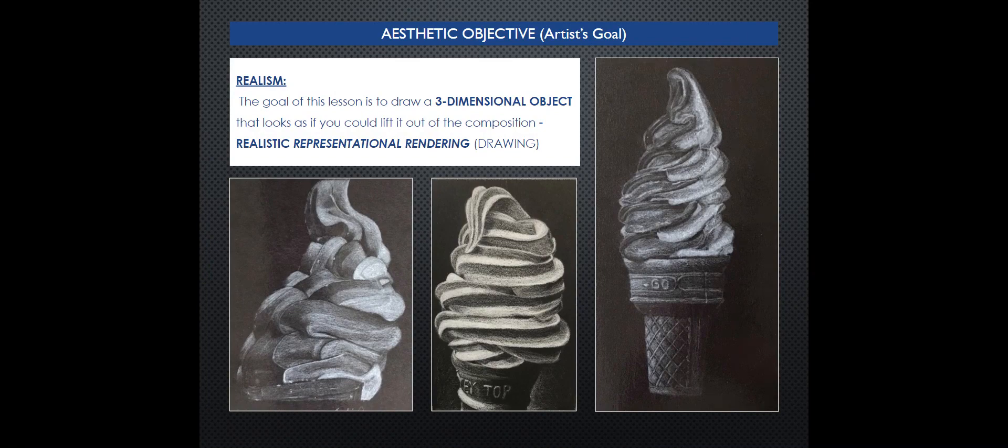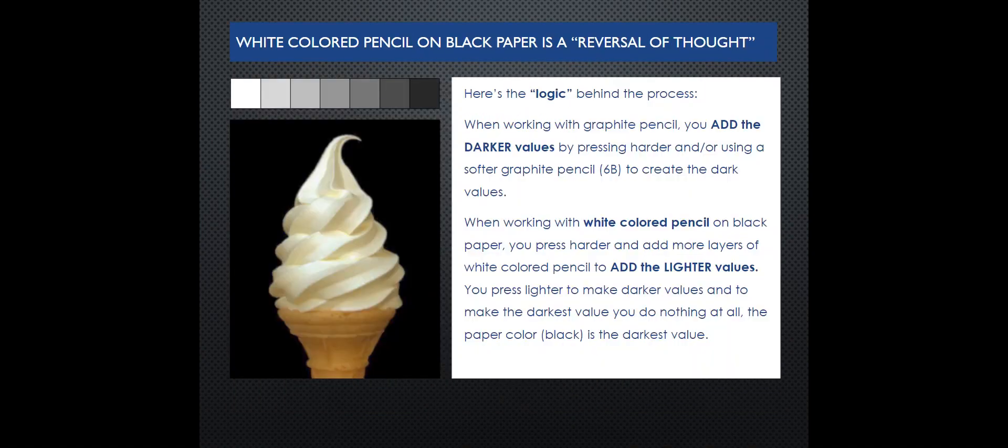Realism: the goal of this lesson is to draw a three-dimensional object that looks as if you can lift it out of the composition. Realistic representational rendering - that's a really fancy way of saying drawing. White colored pencil on black paper is a reversal of thought.